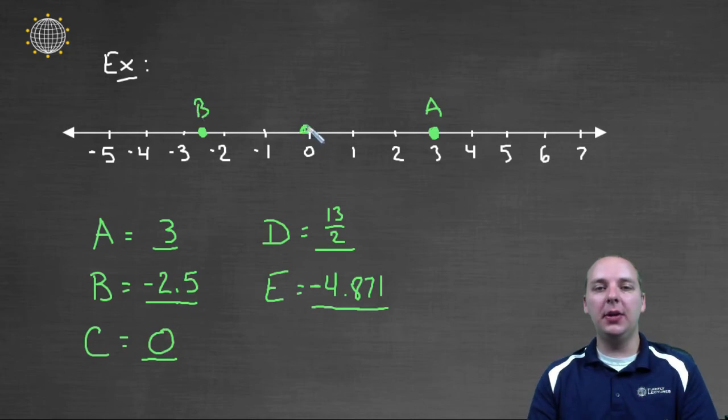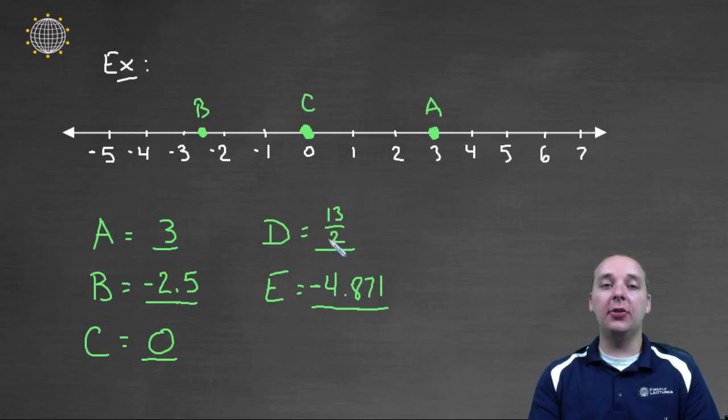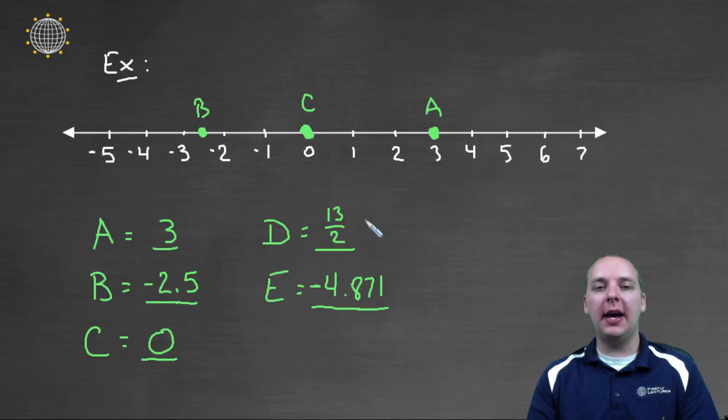C is at zero, you can have points plotted at zero, that's totally fine as well. Sometimes you'll get fractions like thirteen halves. Thirteen halves, if you just use long division, or a calculator, and divided thirteen by two, you would get a decimal of six point five. Six point five is half way between six and seven. So you would go to the right, six and a half units, and this would be where D is.